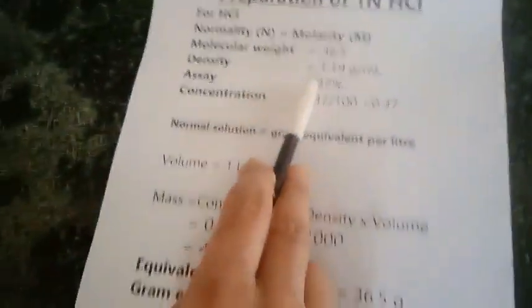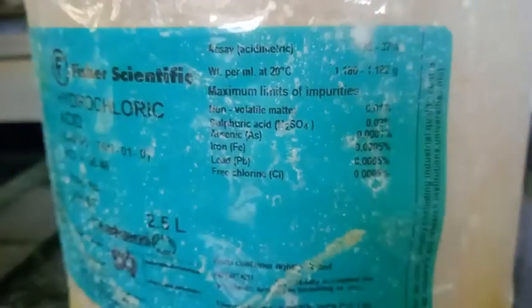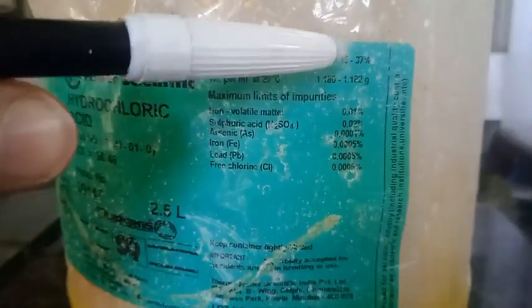I am going to discuss this later on. Here is the molecular weight of hydrochloric acid which is 36.46, so I have written it as 36.5. And here is the given assay as well as the density of the HCl solution.